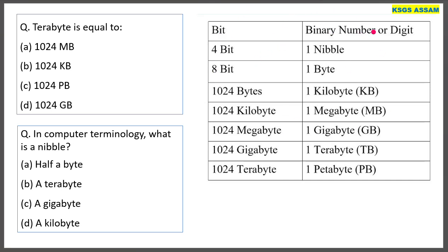Bit — binary number and digit. 8 bits = 1 byte. 1024 bytes = 1 KB. 1024 KB = 1 MB. 1024 MB = 1 GB. 1024 GB = 1 TB. 1024 TB = 1 petabyte (PB). 4 bits = 1 nibble.